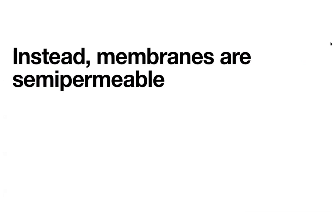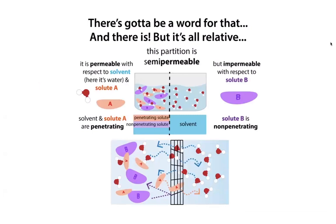In an example, solute A is penetrating — the membrane is permeable to it and to water. However, the membrane is impermeable to solute B, which is non-penetrating. If something can't get through the membrane, it's non-penetrating; if it can, it's penetrating. From the membrane's perspective, it is permeable to penetrating substances and impermeable to non-penetrating ones.